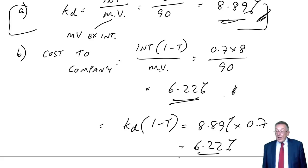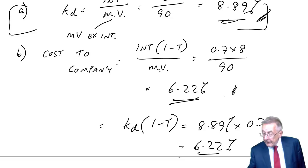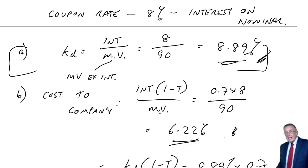One final thing. I said when we looked at the return to the investors, they get the full 8, but cost of the company, they get the tax relief. I'm fully aware that for investors, there could be personal tax implications, but we always ignore personal tax in this exam. So, as far as we're concerned, the investor gets the full 8, but the company, more importantly, is only paying a net $5.60.